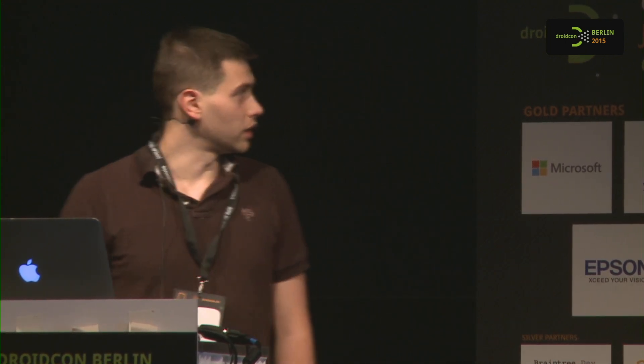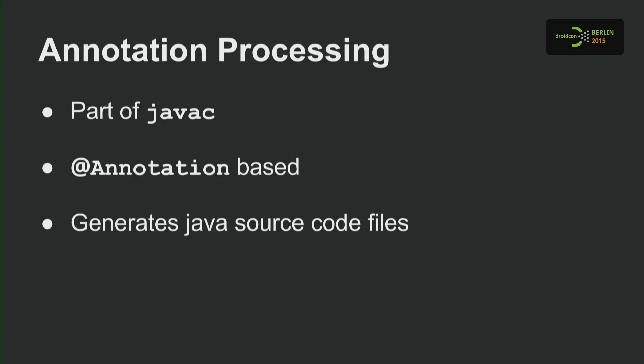Annotation processing was introduced with Java 5 in September 2004, and the standard was released six months later. The standard is still the same that we use nowadays. It is a plug-in system that allows you as a developer to write your own annotation processor and hook them in. It's part of the Java compiler — it scans for annotations and generates code out of them.